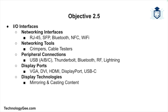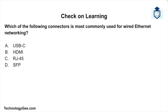To summarize, we've covered a variety of input/output interfaces: networking interfaces like RJ45, SFP, Bluetooth, NFC, and Wi-Fi; networking tools like crimpers and cable testers; peripheral connections including USB, Thunderbolt, Bluetooth, RF, and Lightning; display ports like VGA, DVI, HDMI, DisplayPort, and USB-C; and display technologies for mirroring and casting. Each of these plays a vital role in how devices connect, communicate, and function — important to understand for the CompTIA Tech Plus exam and for practical IT applications.